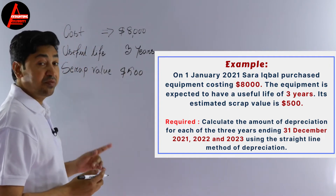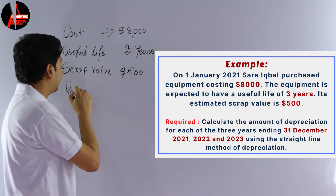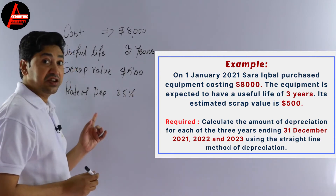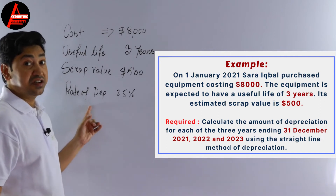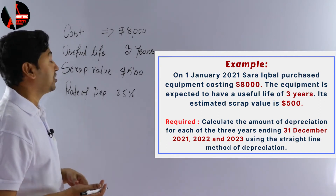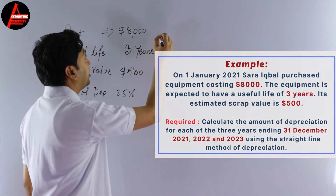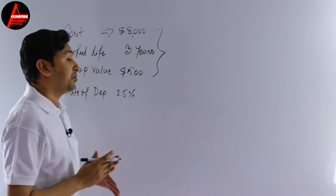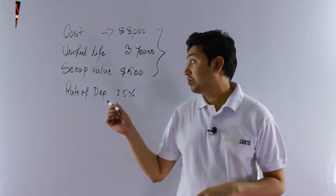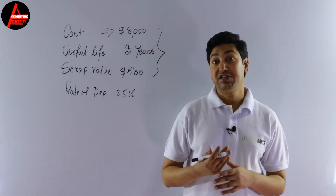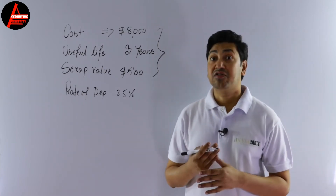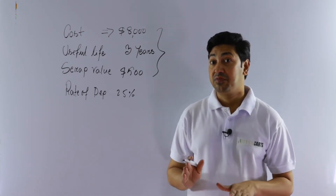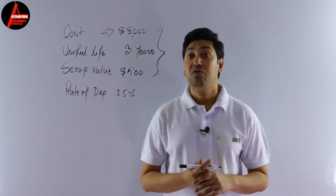If you also have an additional piece of information like a rate of depreciation — for example, 25% — this is extra information and we will not consider it, because to calculate depreciation using the straight-line method we only need those three pieces of information. Sometimes the rate of depreciation is given just to confuse you, but if you know how to apply the formula, it will not be a problem.